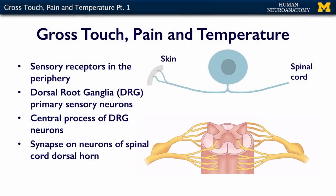First, you have a receptor in the skin. Remember from the integumentary lecture and the intro to this section that there are sensory nerve endings in the skin. They're attached to, or part of, the dorsal root ganglion neuron — a primary sensory neuron — which then projects into the spinal cord. It's represented here: peripheral processes, DRG neuron, going into the dorsal horn.